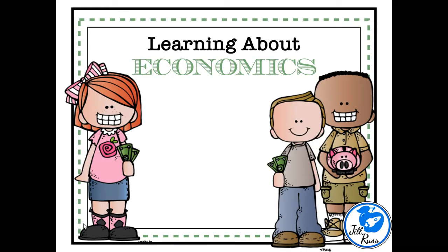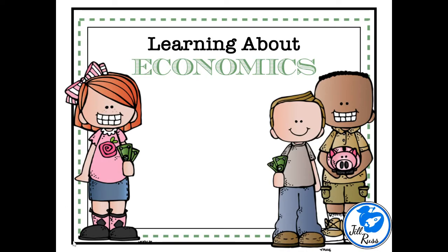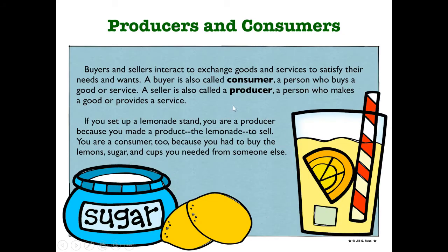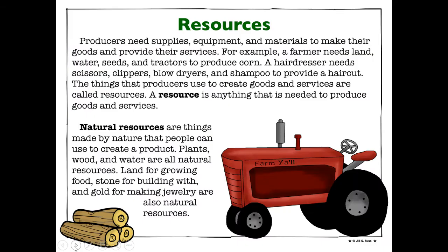Today we're talking about resources, which fall on the same page as producers and consumers. We've already answered our before questions — you've already learned what a producer and consumer is. Remember, a producer is someone who makes a product or a service, and a consumer is someone who buys it — seller and buyer. In order to be a producer or consumer, you have to use resources. Find this in your economics packet and follow along with me.